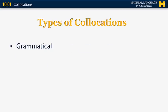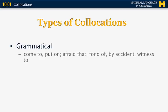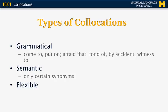Grammatically speaking, there are multiple types of collocations. Some are grammatical, including phrasal verbs such as come to, put on, afraid that, fond of, and prepositional phrases like by accident. They can also be semantic, where only certain synonyms are allowed. Others are very flexible in terms of the physical location of the words that form them — for example, find something by chance, where those words don't have to be necessarily near each other and can have an intermediate set of words in between.